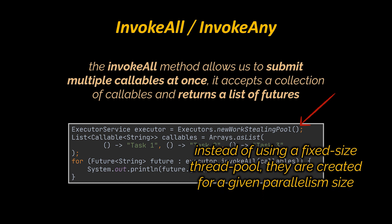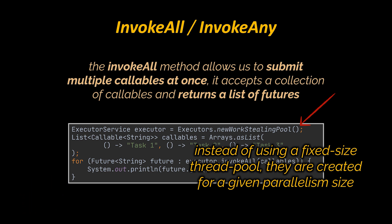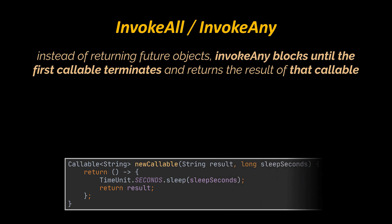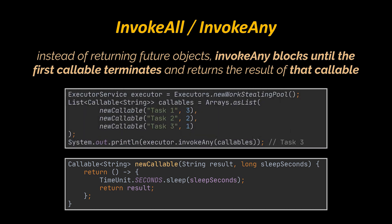newWorkStealingPool also returns a type of ExecutorService, but instead of using a fixed-size thread pool it is created for a given parallelism size, which by default is the number of available CPU cores. Another way of batch-submitting Callables is invokeAny, which works slightly differently than invokeAll — instead of returning Future objects, this method waits until the first Callable terminates and returns its result. In the example, after submitting Callables with different durations via invokeAny, the result of the task with the smallest duration is returned — in that case, the third task.